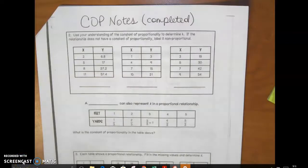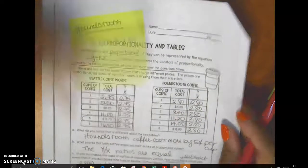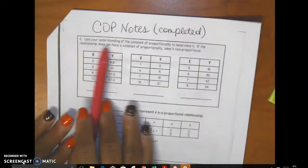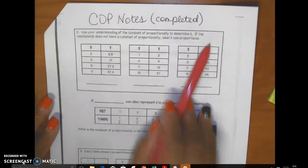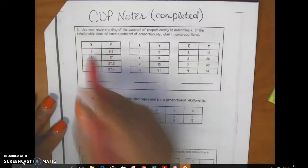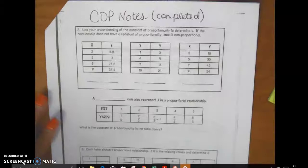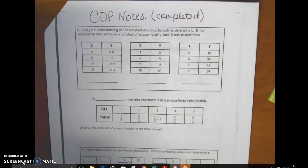Okay, let's finish up our constant of proportionality notes so that we can get ready to move on in class on Thursday and Friday. So the second part of the proportionality in tables note says use your understanding of the constant proportionality to determine k. If the relationship does not have a constant proportionality, label it non-proportional. So I need to take each of these and divide, and I also need some scrap paper so I can show my work.